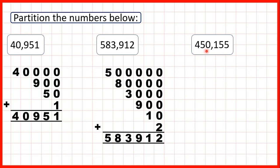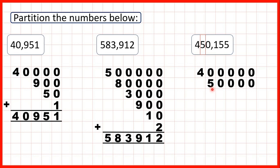Now we have 450,155. This 4 is in our hundred thousands, so that stands for 400,000 — 4 followed by 5 zeros, because after the 4 we have 5 digits in our number. This 5 is in our ten thousands, so that's 50,000. We have a zero in our thousands, but we don't partition zeros because zero, whatever place value it's in, always represents zero. We have zeros in numbers because they give other digits the correct value, making sure other digits are in the right place value column. But zeros don't have any value in themselves.